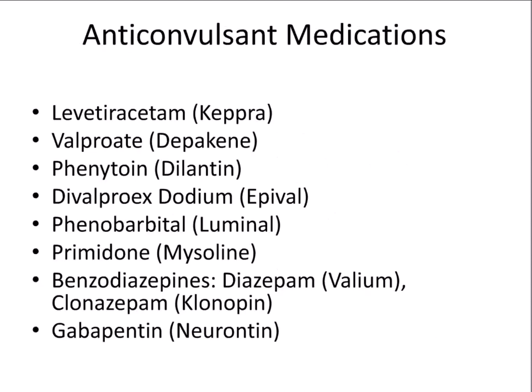This slide lists some anti-convulsant medications that it might be helpful to be familiar with. The main one I see in the clinic is Keppra — if a patient is on Keppra, they should probably be on seizure precautions. The others are used to treat seizures as well as other things, so if you see those medications in a patient's medication list, ask if that patient experiences seizures. If not, the medication might be used for something else — for example, Neurontin is often used to treat nerve pain, with nothing to worry about as far as seizure activity.